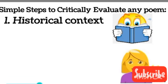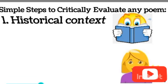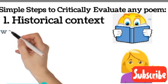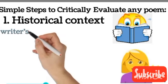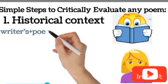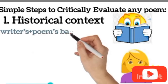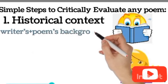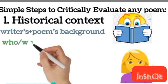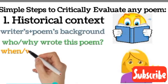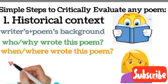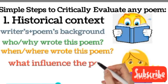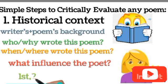Number one: you must know about the historical context of the poem. In this step, you should know the writer's background and poem background. You should know that the poem was written at what time, when was it written, and the main events, dates, characters, etc.